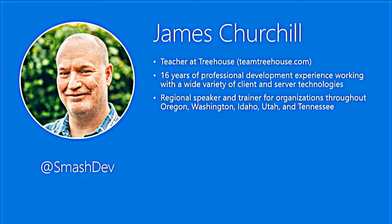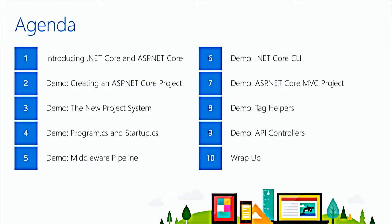I've also been a speaker and trainer, presenting in Oregon, Washington, Utah, Tennessee, Idaho, and lots of great places. Our basic agenda: we're going to start by giving a quick introduction to .NET Core and ASP.NET Core, then jump into some demos. We'll create a project using Visual Studio 2017, look at the new csproj project system, and the underpinnings of an ASP.NET Core application — Program.cs, Startup.cs — before looking at the middleware pipeline. We'll also cover a bit of the .NET Core CLI, then create an MVC project, and time permitting, look at tag helpers and API controllers.